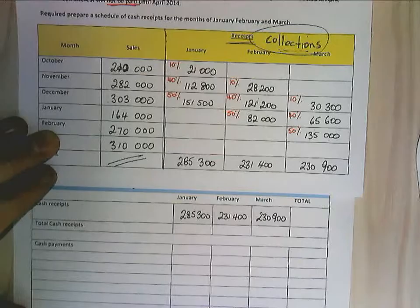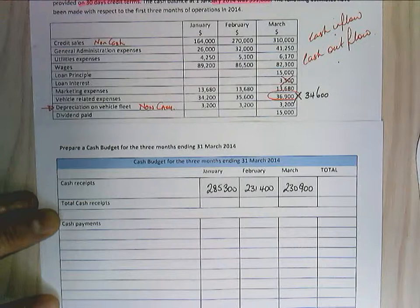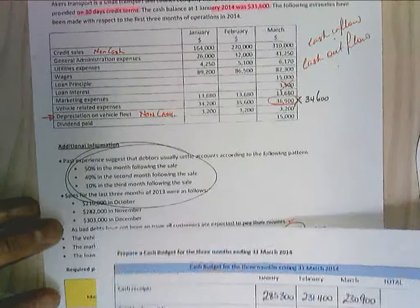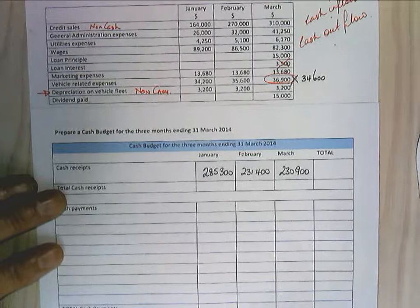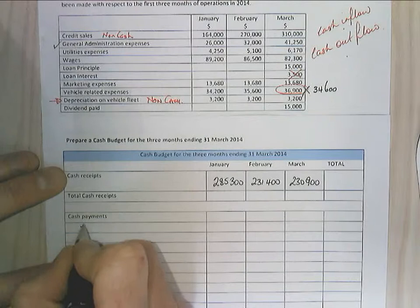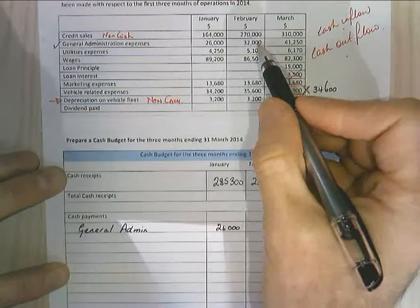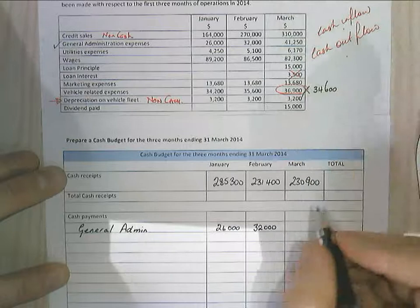Now I want to have a look at my cash payments. I need to refer back up to my other information provided here. We made some adjustments earlier, and it's saying that all these other items must be paid in cash — you can always assume we're just paying it in cash. So now looking at cash payments, I'll do them in the order they appear. General admin expenses: $26,000, $32,000, and $41,250.